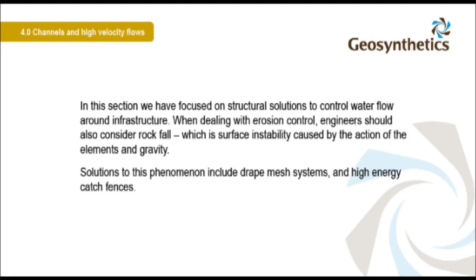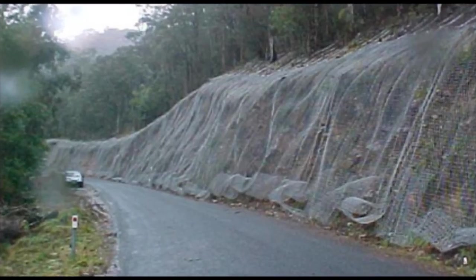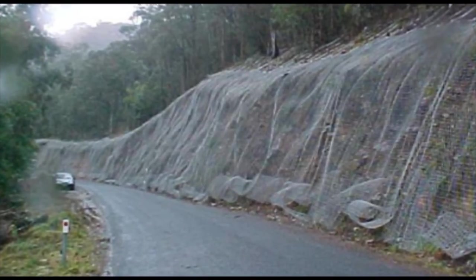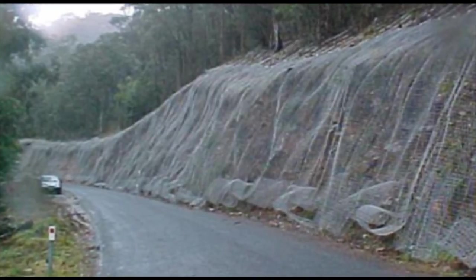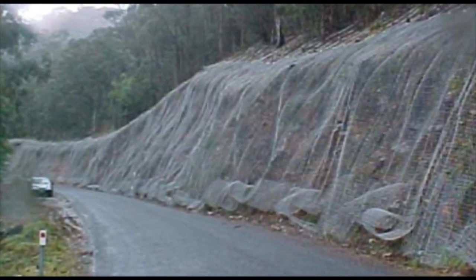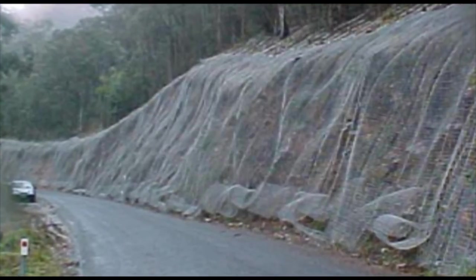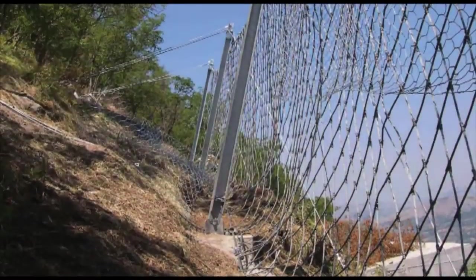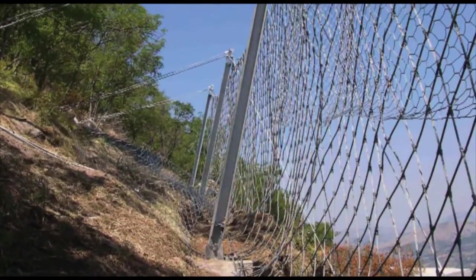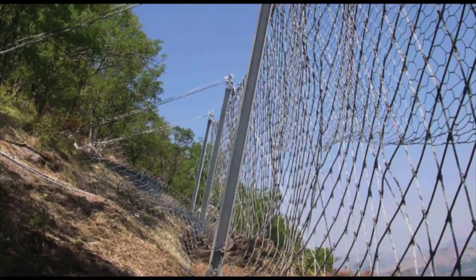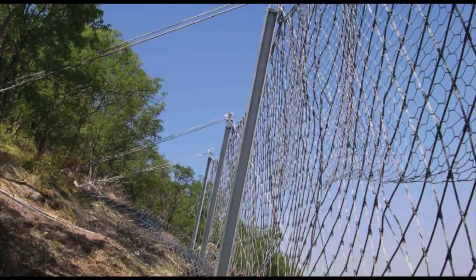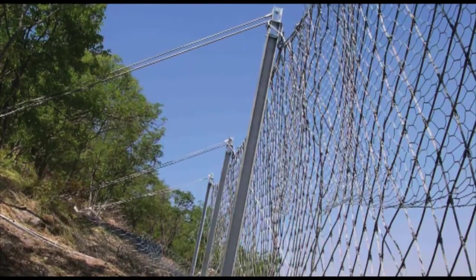Solutions to this phenomenon include drape mesh systems and high energy catch fences. Erosion of slopes can lead to rocks spalling off the face. Rockfall netting can simply be draped over the surface of the slope — it does not prevent rocks from falling, but safely controls the trajectory. In some instances, erosion of the surface may cause large rocks to fall, and catch fences can be used to intercept rocks in high risk locations.